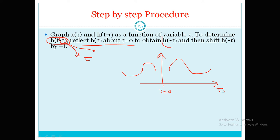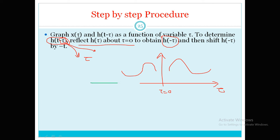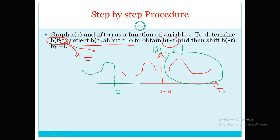Once I have performed the reflection to get h(−τ), I need to shift h(−τ) by t. Since it is minus t, it is a negative shift — it shifts t units to the left. The red color signal is h(τ), which is then changed to the green color signal h(t − τ). Once we understand this concept we can move forward.